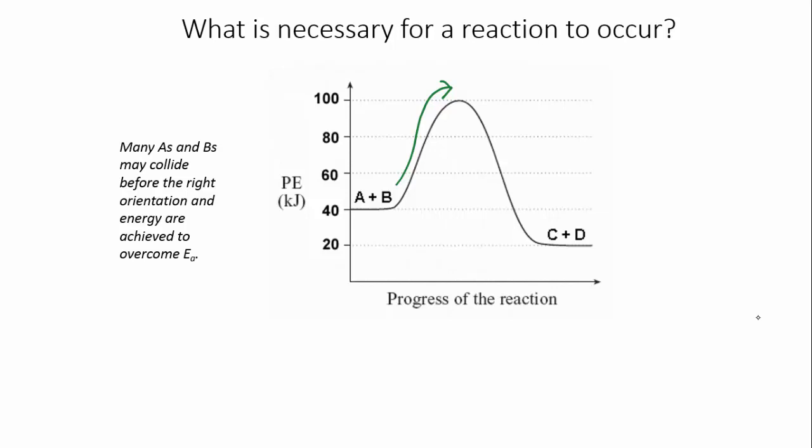If successful collisions are rare, then the reaction is very slow. In other words, the rate of reaction depends on how frequently successful collisions occur.